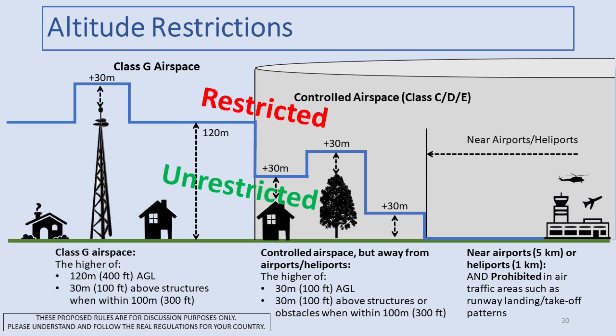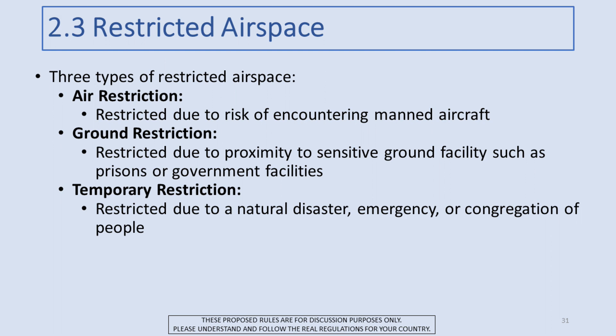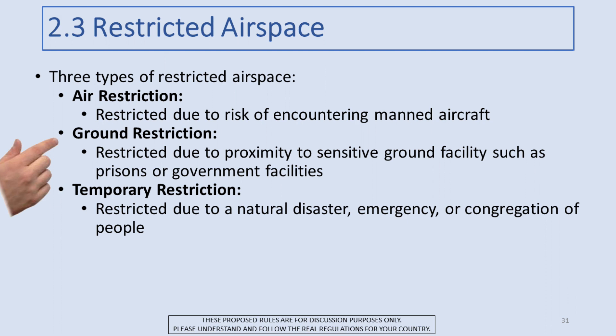Moving on to restricted airspace — I've defined three types. Air restriction, which is restricted due to the risk of encountering a manned aircraft. Ground restriction, due to proximity to sensitive ground facilities such as prisons or government facilities. And temporary restrictions due to a natural disaster or a congregation of people.